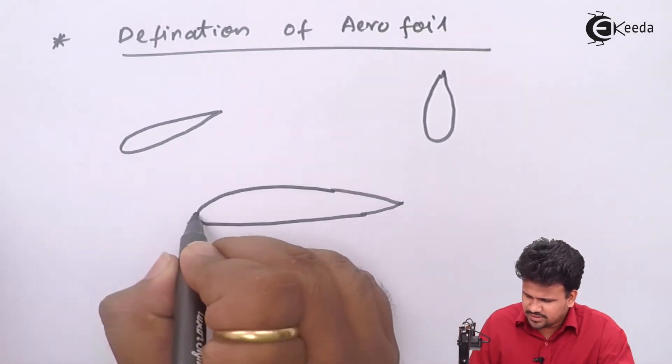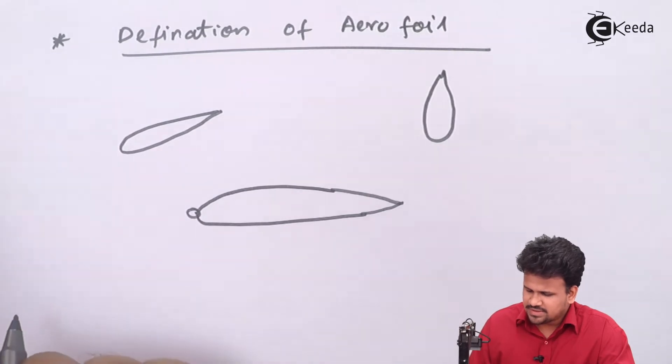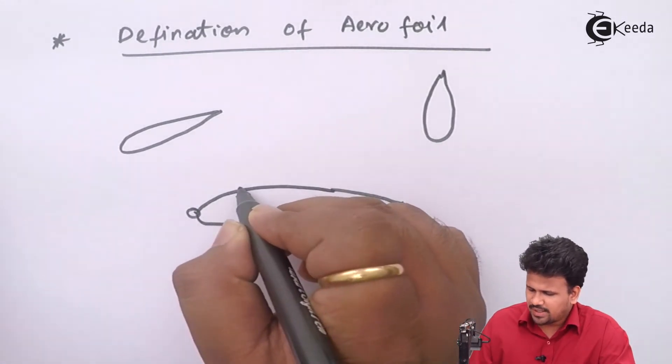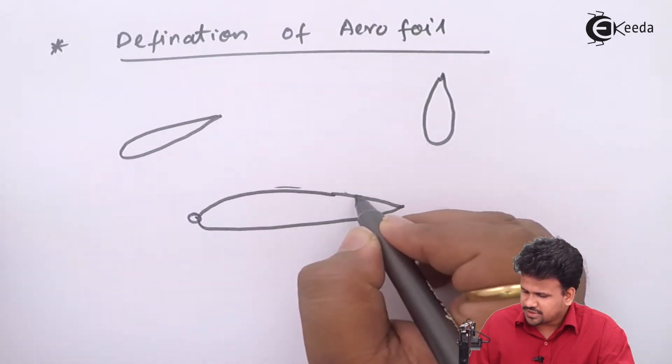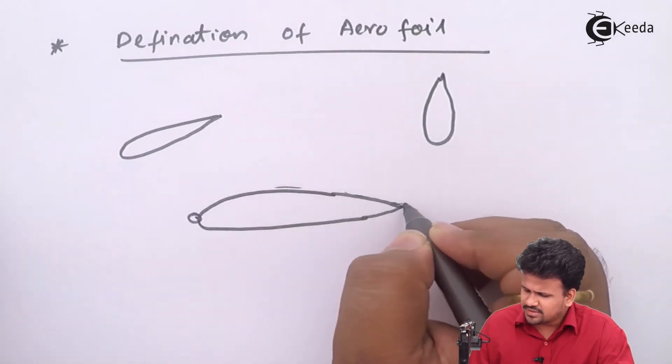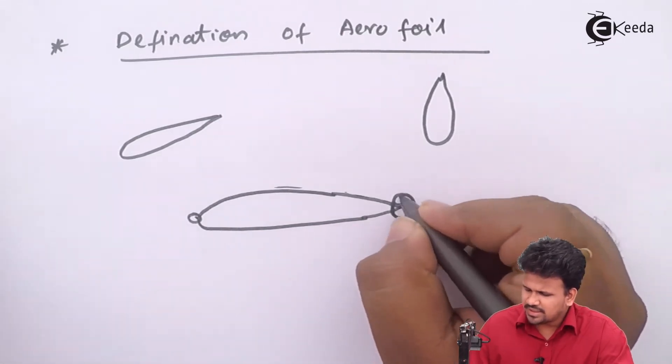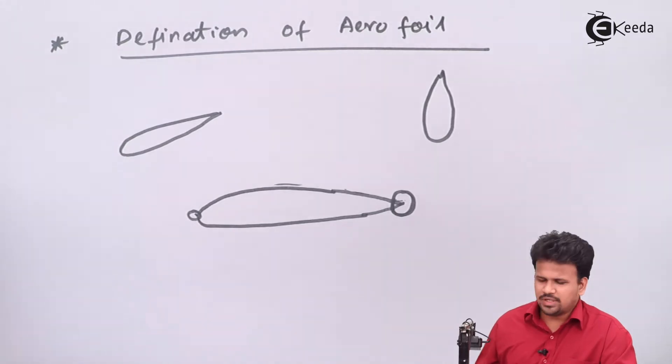If we consider this as an aerofoil, this shape is such that over here at the starting point or leading edge, as we go ahead, the boundary layer separation does not occur till the very end, or it just occurs near the trailing edge. So that is what an aerofoil is.